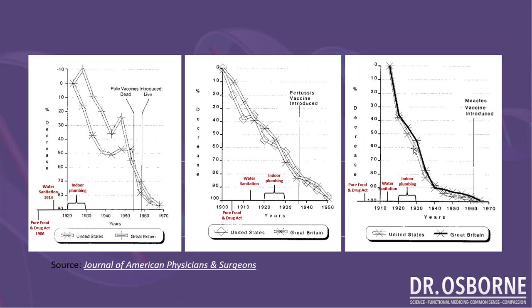We see the same trend with pertussis — from 1900 to circa 1935, where that vaccine was actually introduced, we see a massive reduction before the vaccine is even introduced, as a result of water sanitation, indoor plumbing, and the Pure Food and Drug Act. Then looking at measles, we see the same scenario, only even more aggressive — measles comes all the way down to extremely low levels before the measles vaccine is introduced. I'm not telling you to get vaccinated or not — that's your decision to make based on your own research and conversations with your doctor.